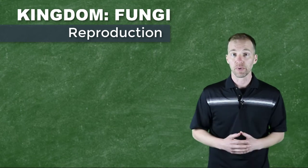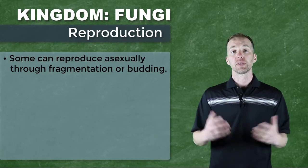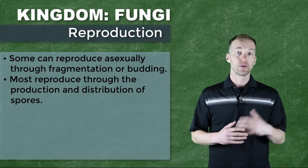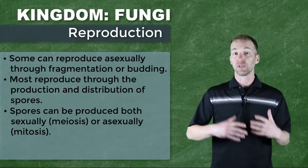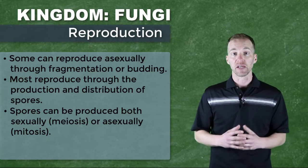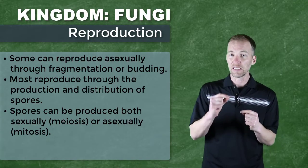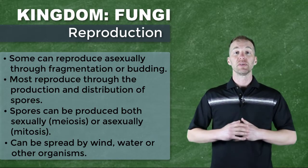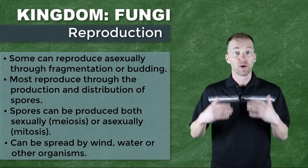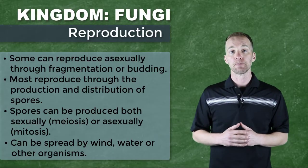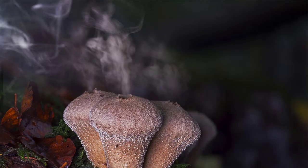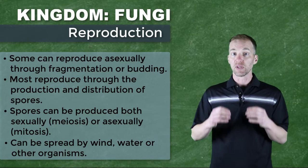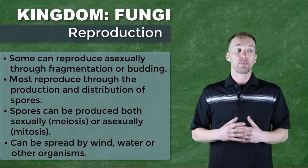Some fungi can reproduce through fragmentation or budding, but the vast majority reproduce through spores. These spores can be produced through either meiotic or mitotic cell divisions — that is, they can reproduce sexually or asexually. Spores are kind of like little seeds that plants have, but much much smaller. Some fungi can produce millions, billions, or even trillions of spores, increasing the likelihood of finding favorable conditions. They also have interesting ways of dispersing spores — many through the air, but some through water or transported on and in animals. Once spores find a favorable environment, they can potentially grow up and create mature fungi.